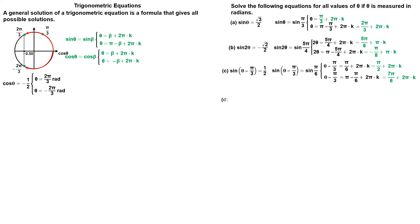Solving this equation for cosine of theta, we get cosine of theta is equal to square root of 2 divided by 2. The reference angle is 45 degrees, or pi divided by 4 radians. We can write cosine of theta is equal to cosine of pi divided by 4. Cosine is positive in quadrant 1 and quadrant 4. The general solutions are given as follows.